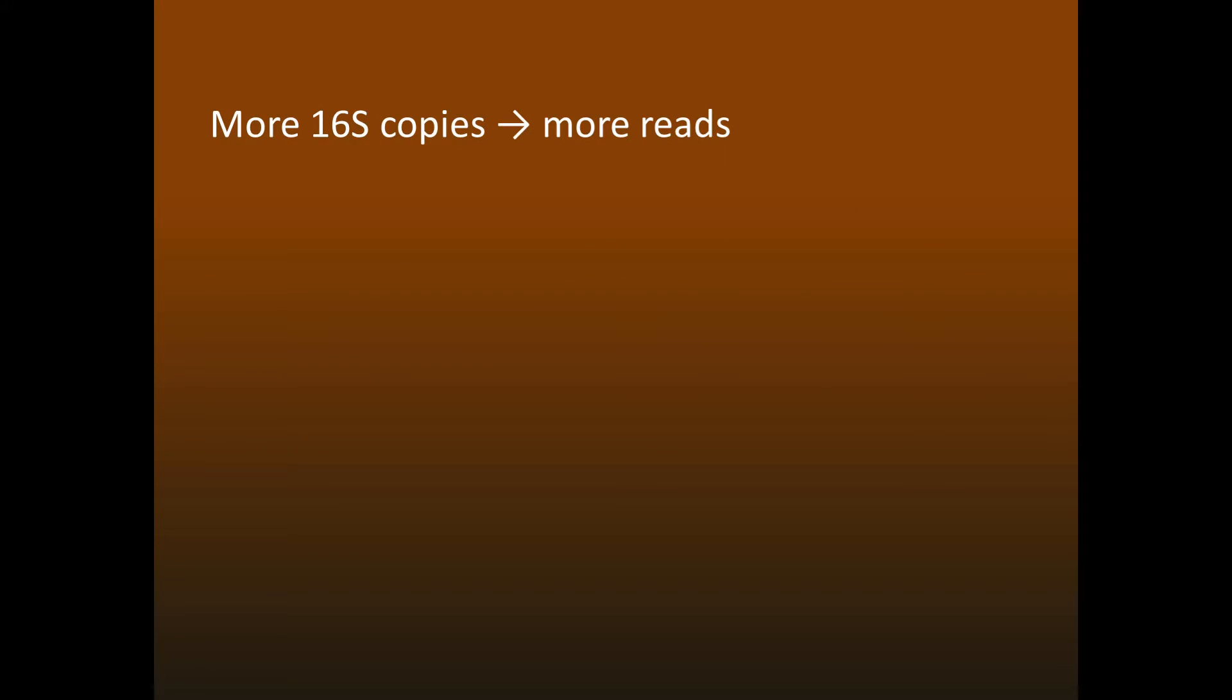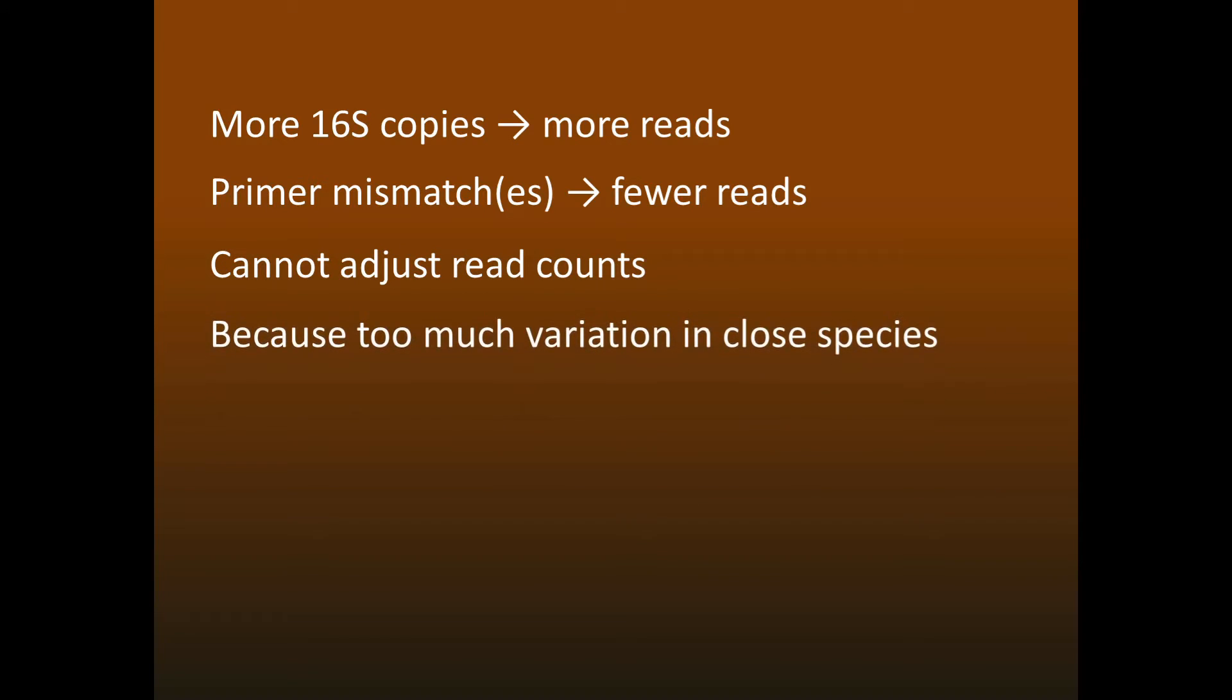Obviously, if there are more copies of the gene, then you get more reads. And if there are primer mismatches, you get fewer reads. Unfortunately, you can't adjust read counts to get accurate frequencies, because there's too much variation in closely related species, so you can't use databases of known species to look up the correction factor. There are some published methods that claim to do this, but unfortunately their benchmark tests are not realistic, and in fact they do not work.